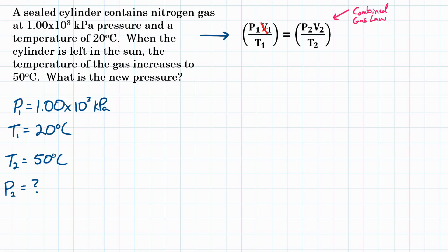So because the volume doesn't change, we can cancel that out in our combined gas law. It's not going to affect our problem. So if we pretend like it's basically not there, we end up with P1 over T1 equals P2 over T2.